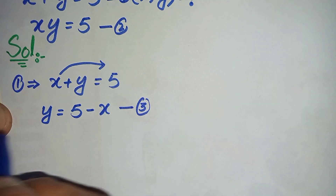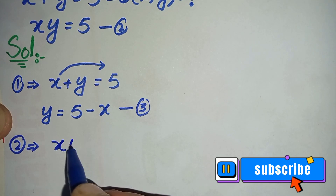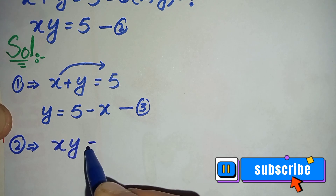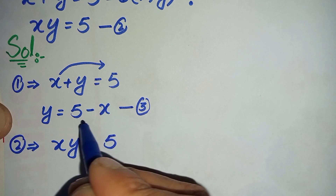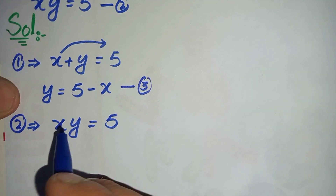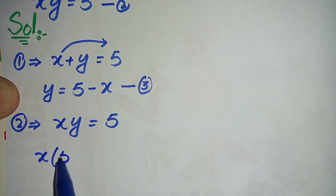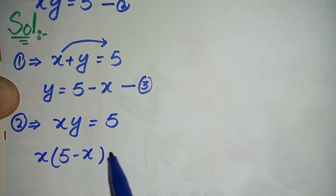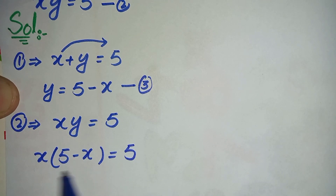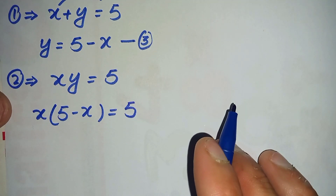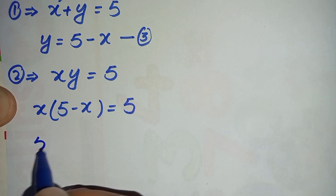We will substitute this value of y into equation number two in order to find the value of x. Equation number two is x times y is equal to 5. We will replace y with its value 5 minus x, so it will become x times (5 minus x) is equal to 5. This whole equation is now in terms of x.